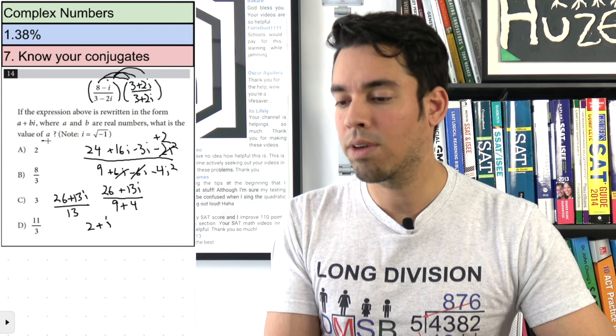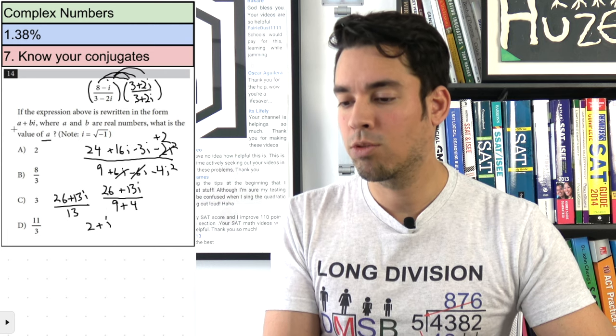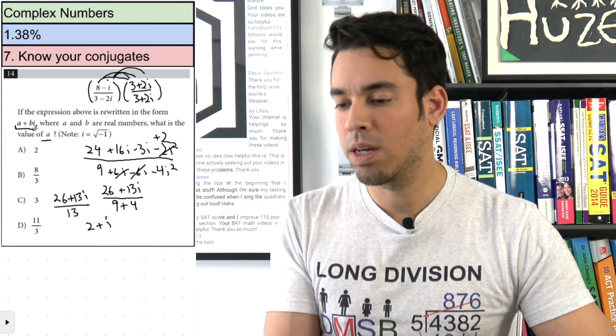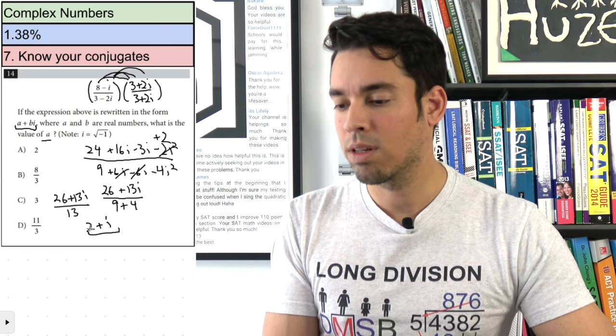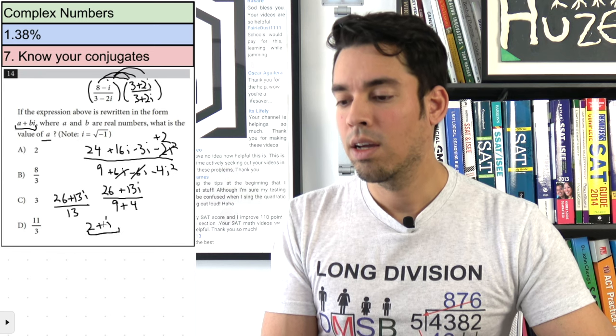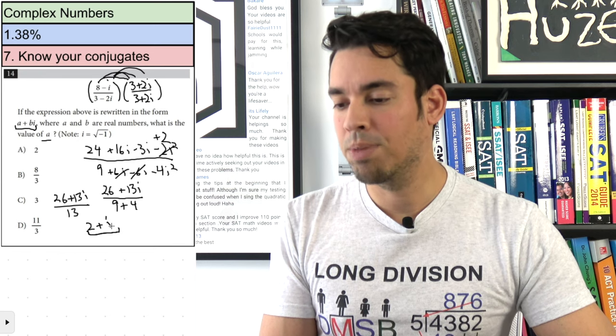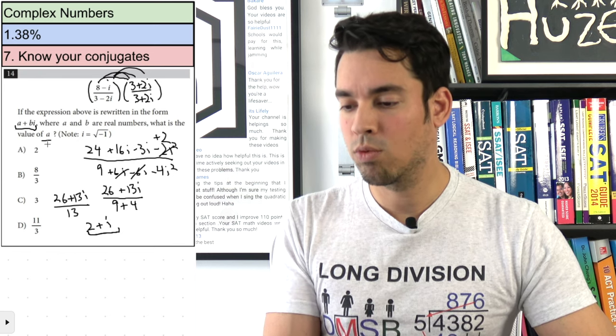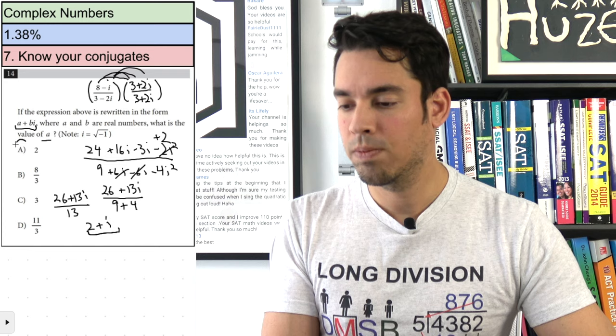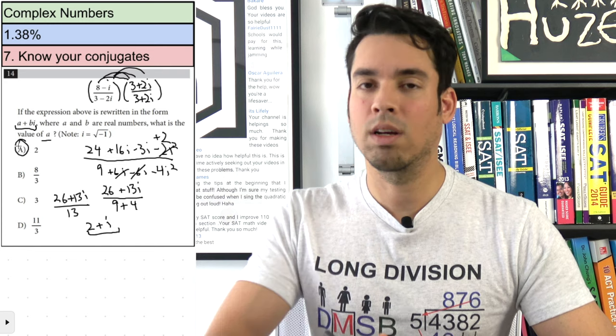Dividing both parts by 13 gives 2 + i, which is in the form a + bi. They want the value of a, which is 2.